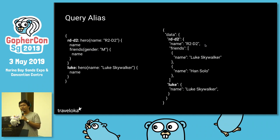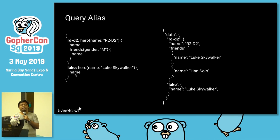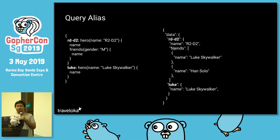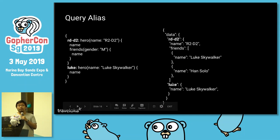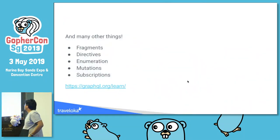Another cool thing: you can run the same query twice in one single call using query aliases. Here we have two calls to the hero query — the first requests name, friends, and the friends' names, while the second requests only the name. For each result you can specify an alias, so the first hero becomes 'R2D2' in the JSON result, and the second has alias 'Luke'. There are many other interesting features in GraphQL: fragments, directives, enums, mutations, subscriptions — you can learn them directly from the documentation.